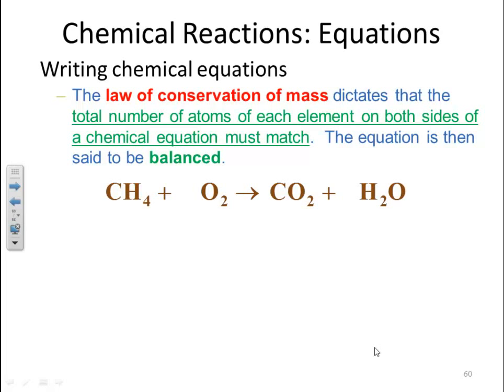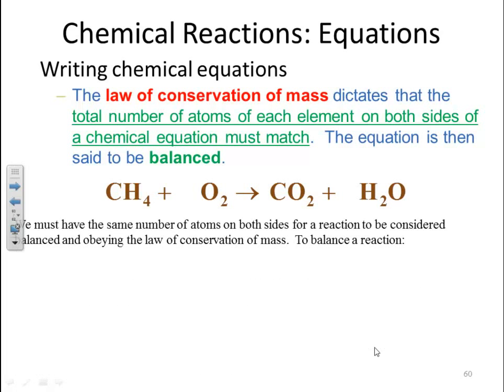The law of conservation of mass dictates that the total number of atoms of each element on both sides of a chemical equation must match. The equation is said to be balanced. So what we're saying here is we've got to have the same number of atoms of each species on both sides for it to be a balanced equation. We must have the same number of atoms on both sides for a reaction to be considered balanced and obeying the law of conservation of mass.